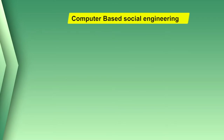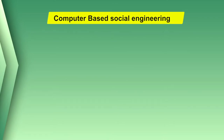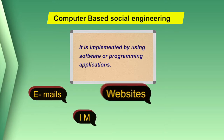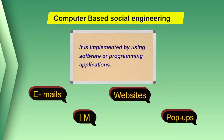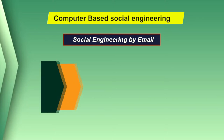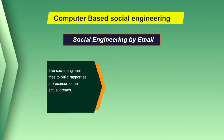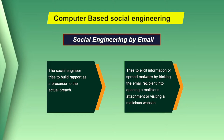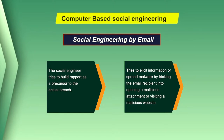The third type of social engineering is computer-based social engineering, implemented using software or programming applications like emails, instant messengers, websites, pop-ups, etc. Let us discuss how social engineering attacks are performed by email. Social engineering emails take many forms. The social engineer tries to build rapport as a precursor to the actual breach, or tries to elicit information or spread malware by tricking the email recipient into opening a malicious attachment or visiting a malicious website.